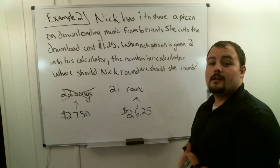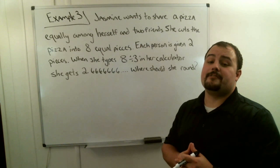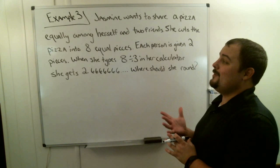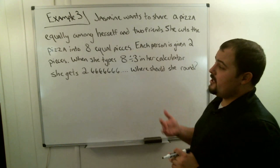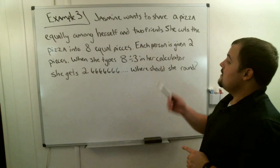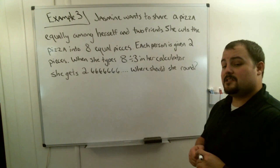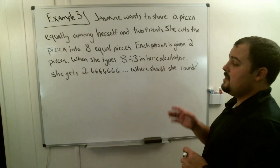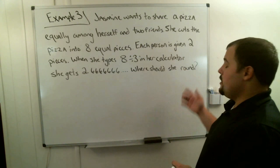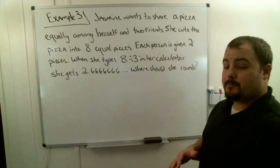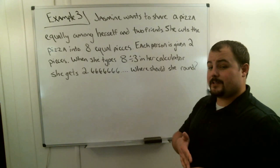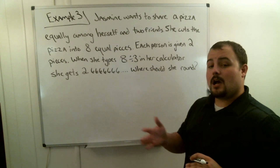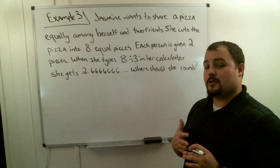Let's keep going — we're almost done. In this question we're going to talk about pizza. Jasmine wants to share a pizza equally among herself and two other friends. She cuts the pizza into eight equal slices, and each person is given two pieces. When she types 8 divided by 3 in her calculator, she gets 2.666... repeating. Where should she round? Should she round the number of slices up or down, and if she rounds down, how should she split up the last two pieces?